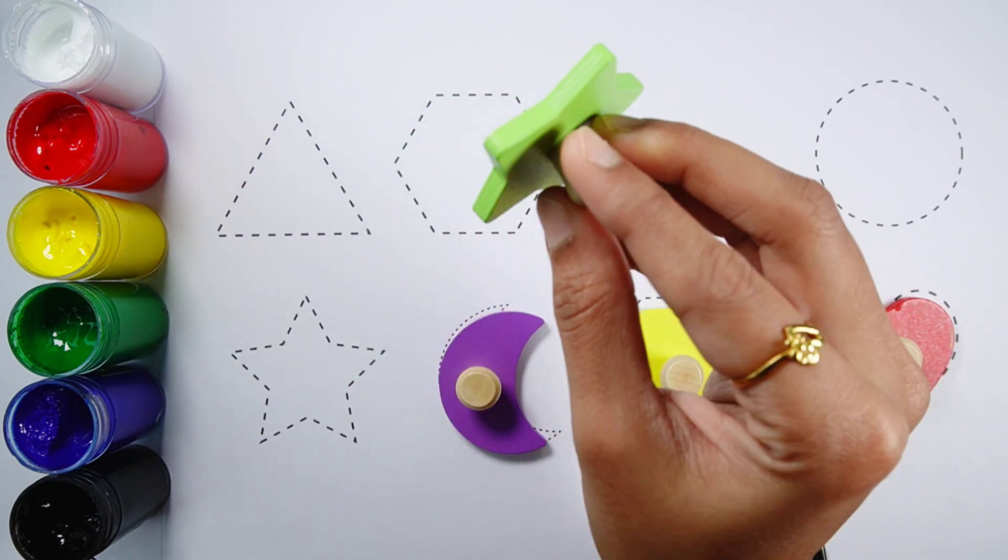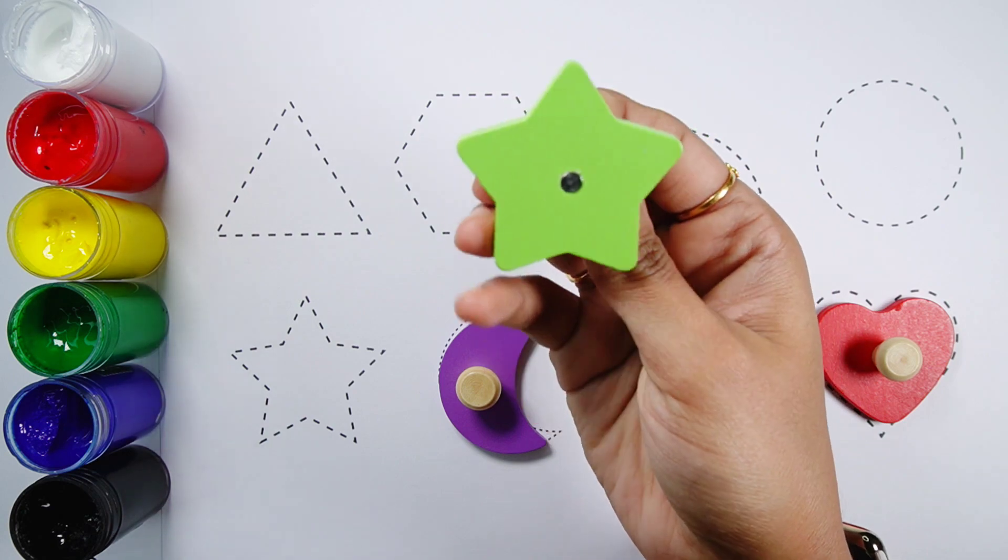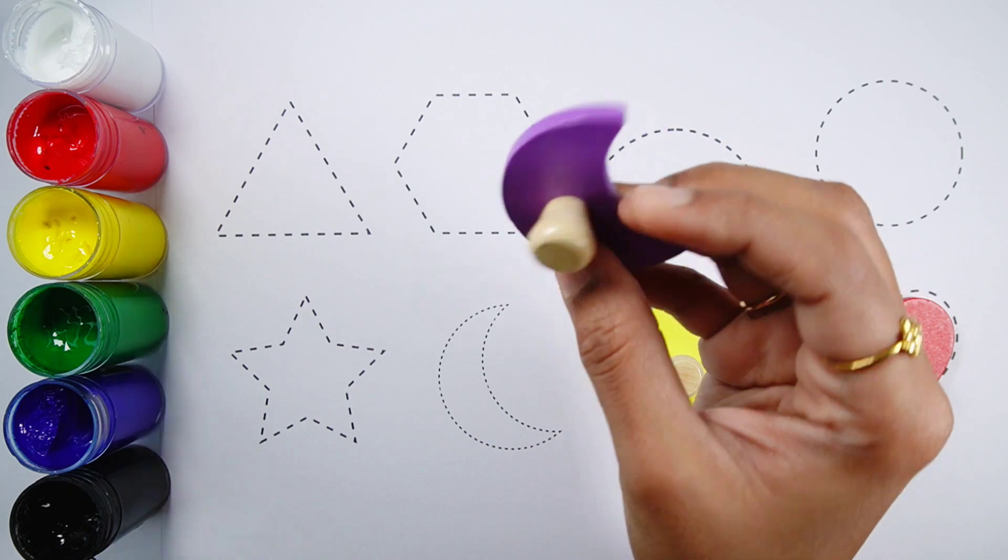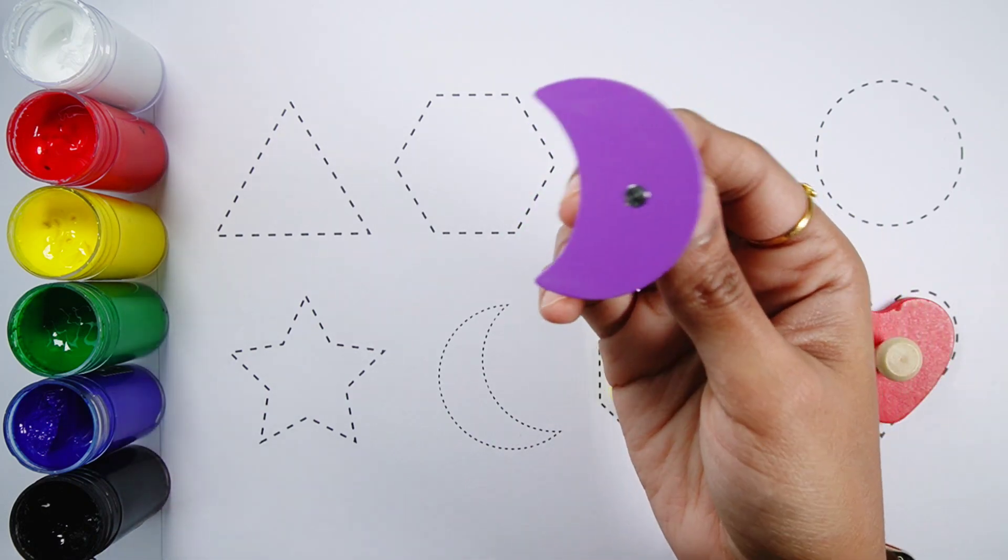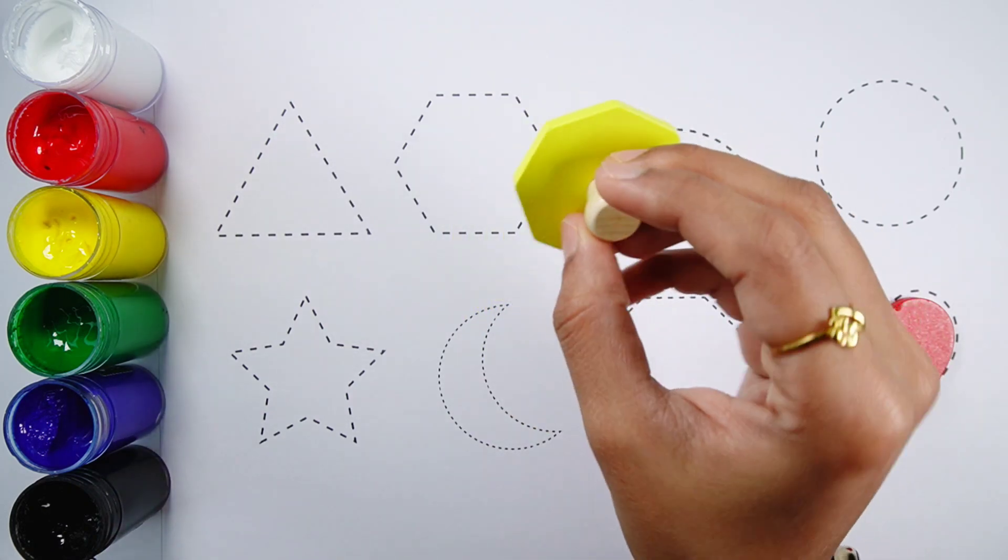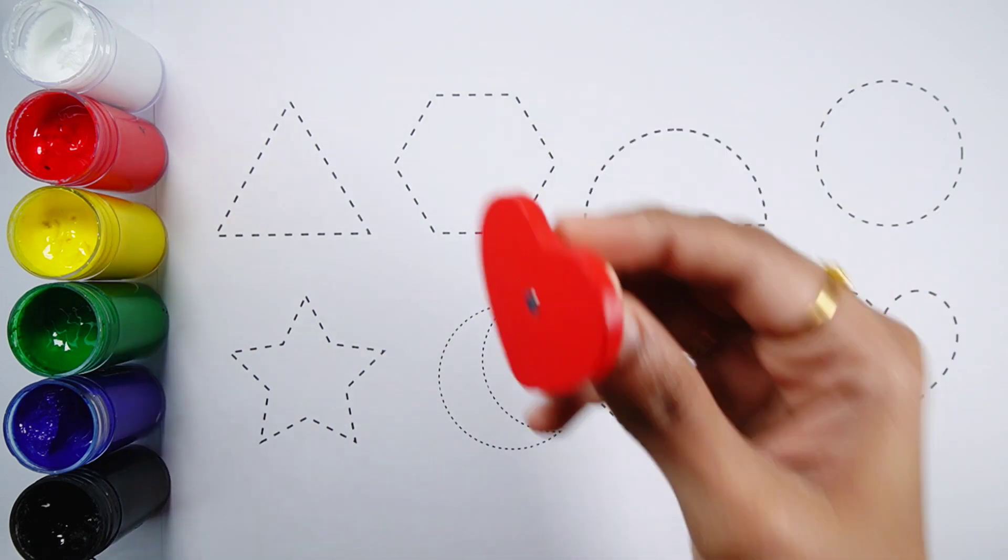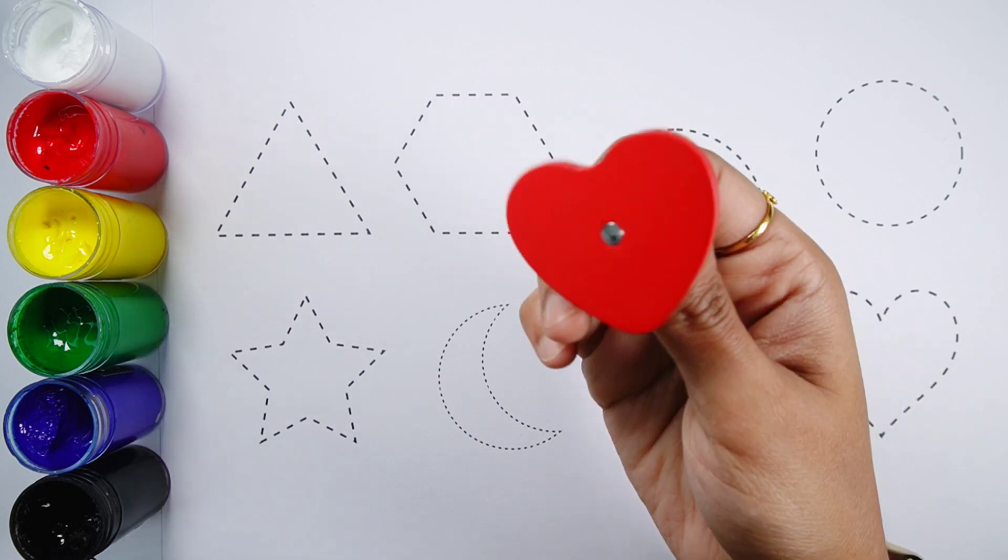Star, a green star. Crescent, a purple crescent. Octagon, a yellow octagon. Heart, a red heart.